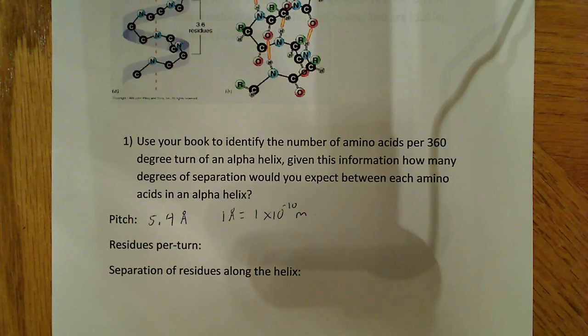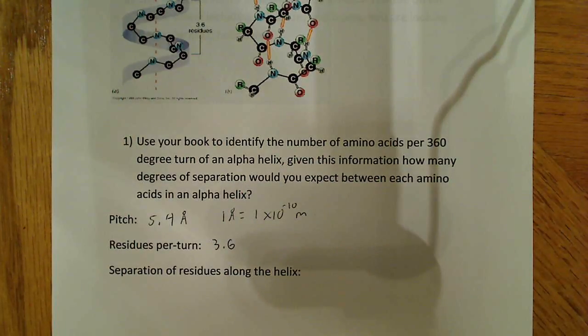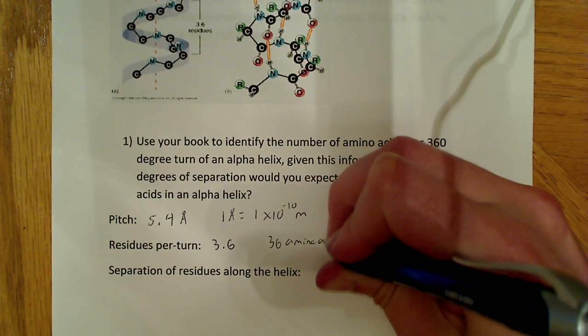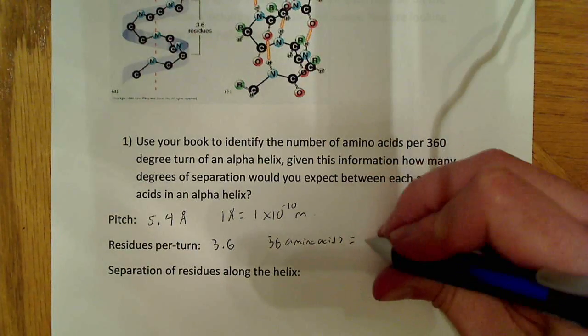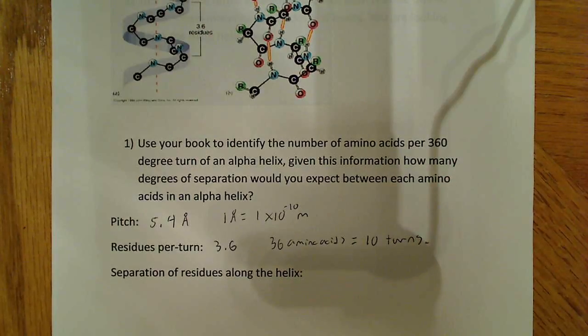Now, the residues per turn, so you want to know how many residues does it take to make one full turn around the helix. And, that answer is 3.6. So, it's 3.6 amino acid residues per turn. And, an example of that is, if the helix has, say, 36 amino acids. So, if the helix has 36 amino acids, or if it's 36 amino acids long, there would be 10 turns.